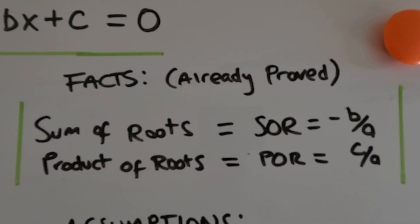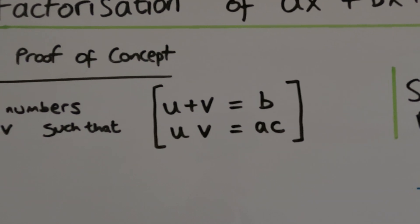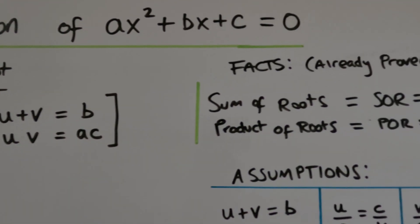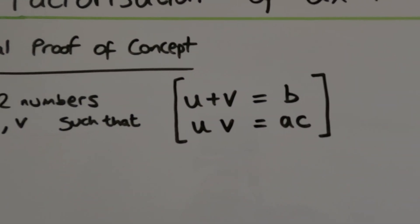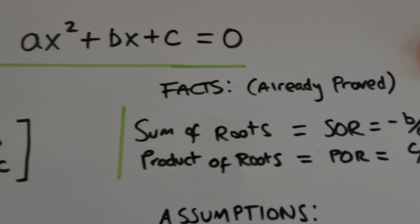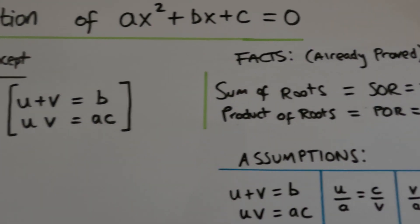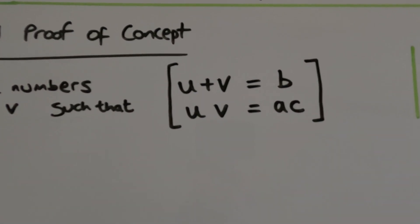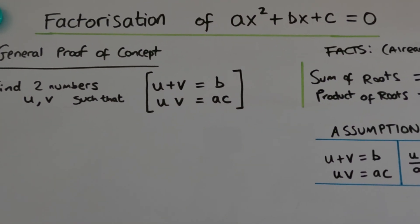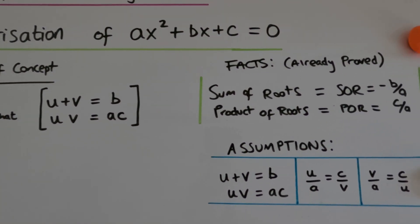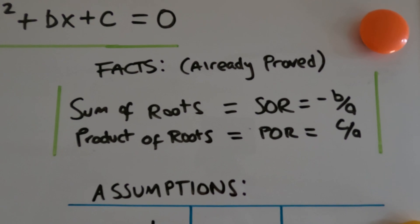This is a lot easier to prove, but they're actually all interlinked — one implies the other. This method would never work if this wasn't true. Likewise, this wouldn't be true if this method didn't work. One implies the other, but we still have to prove it.